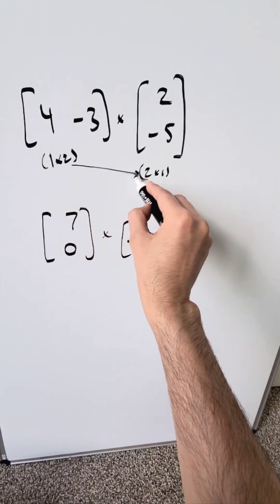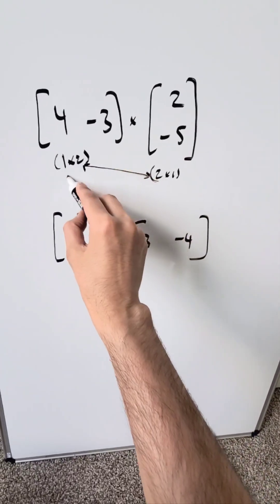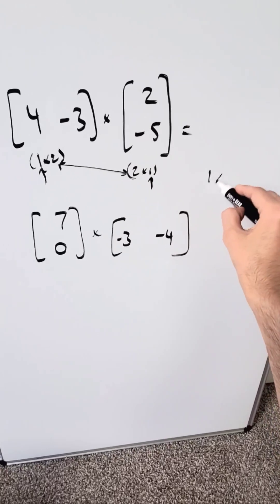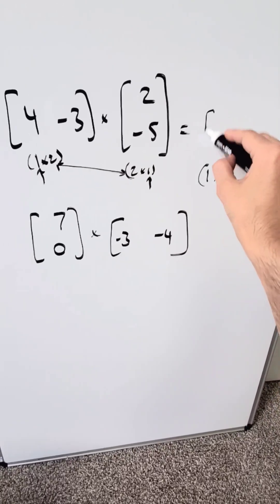You look at these inner two numbers. If they match, you can do the operation, and the end result is dictated by the outer two. So you're looking here at a 1 by 1 matrix end result, which would be a single item.